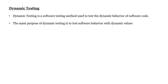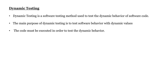The main purpose of dynamic testing is to test software behavior with dynamic values. The code must be executed in order to test the dynamic behavior. For example, let's consider a login page with username and password fields. We will have to test it with different sets of values. Suppose the username should not contain special characters — we will have to test it with a dynamic load of values and confirm that it is not accepting values which it should not accept. This type of testing is handled by dynamic testing, which requires execution of the code.